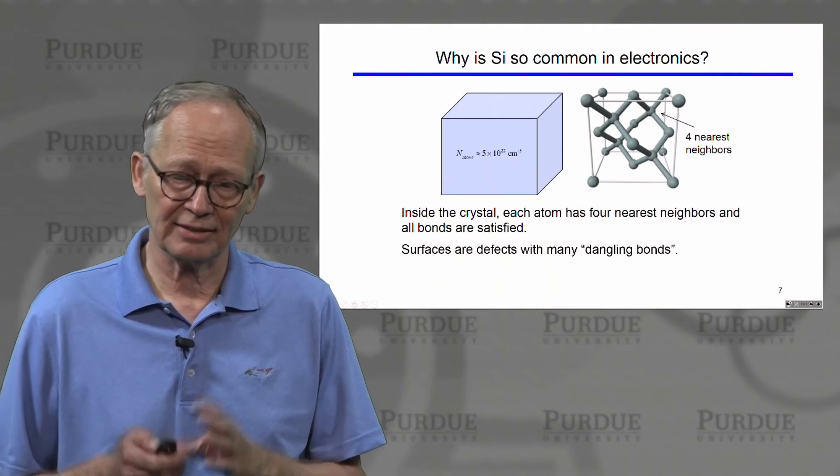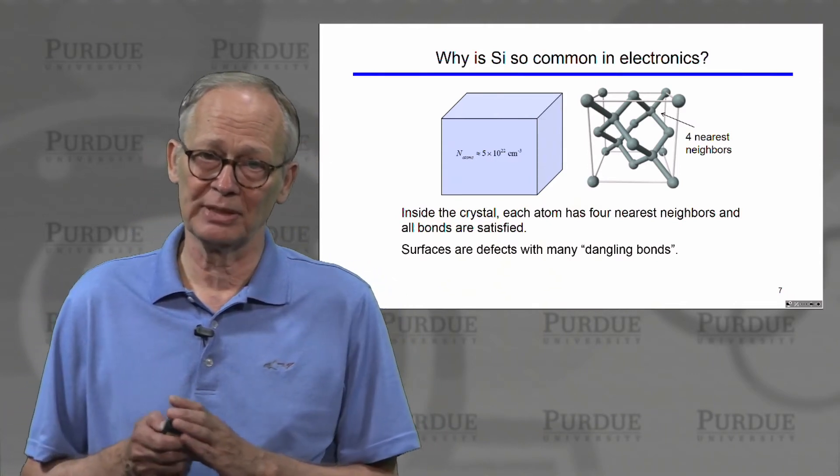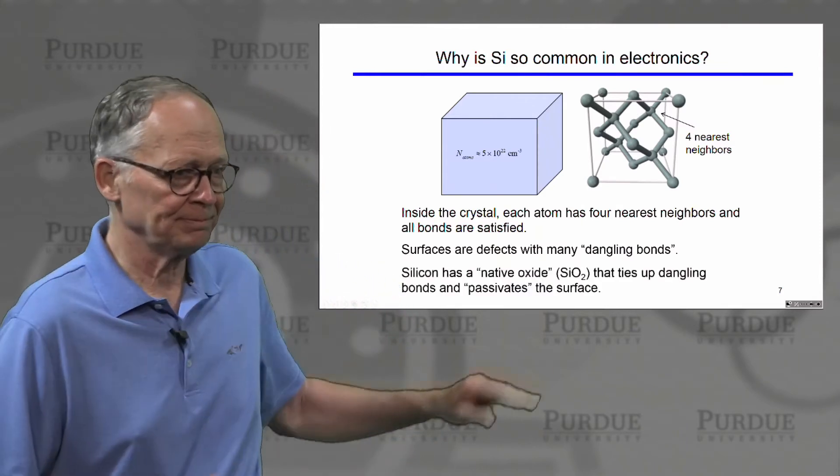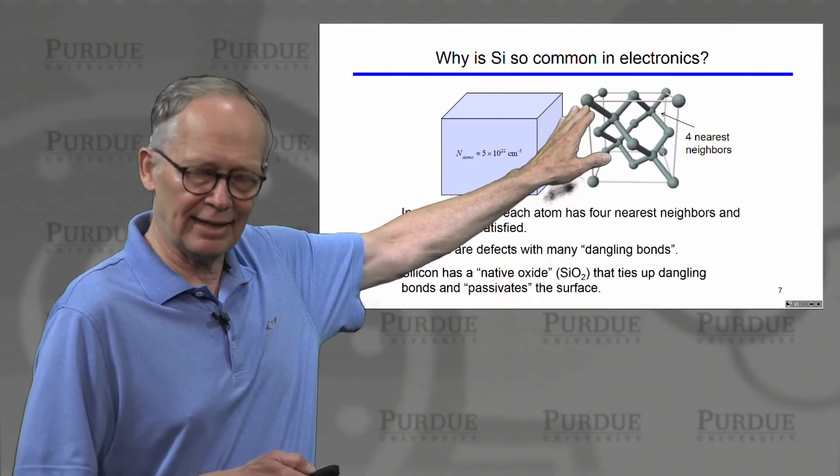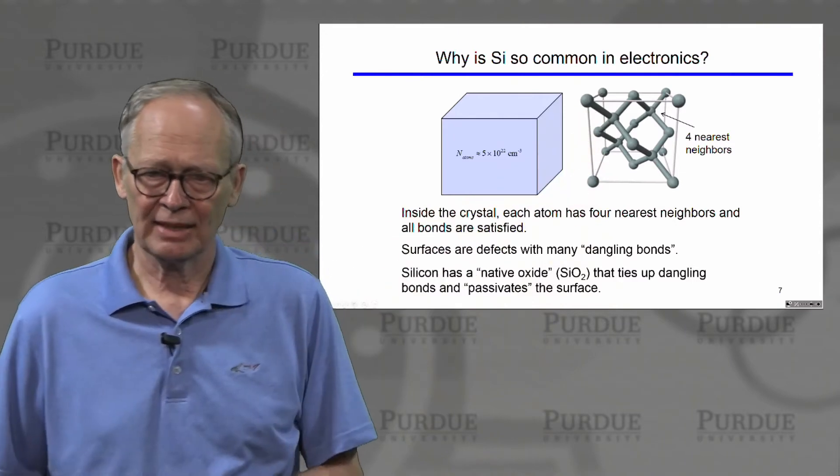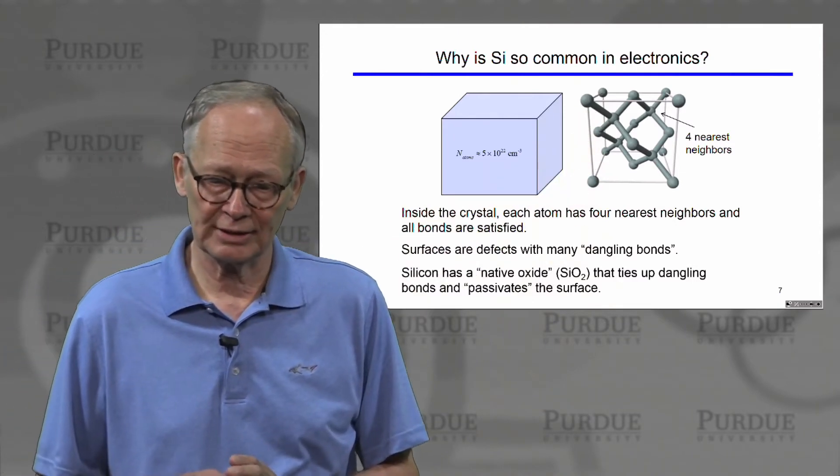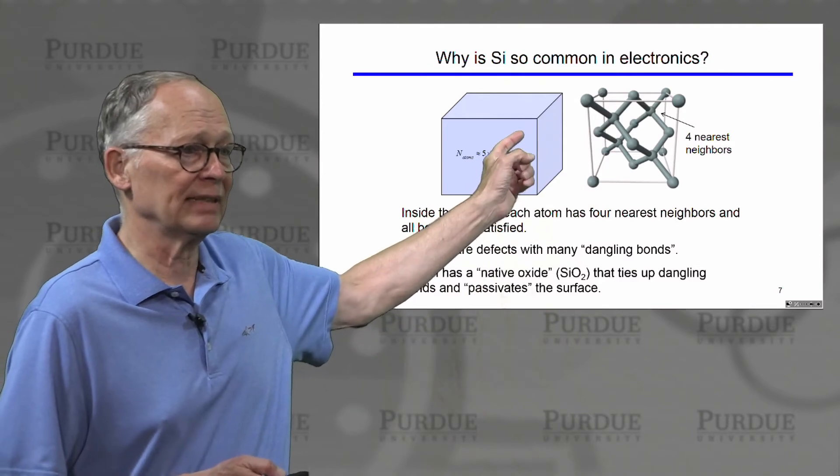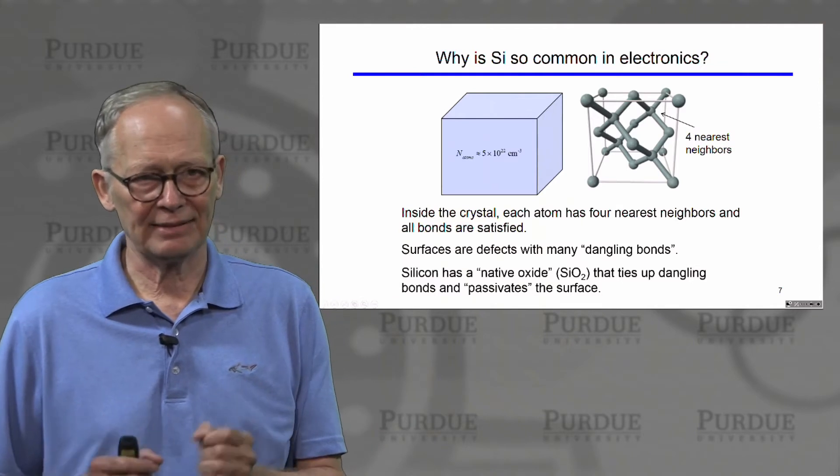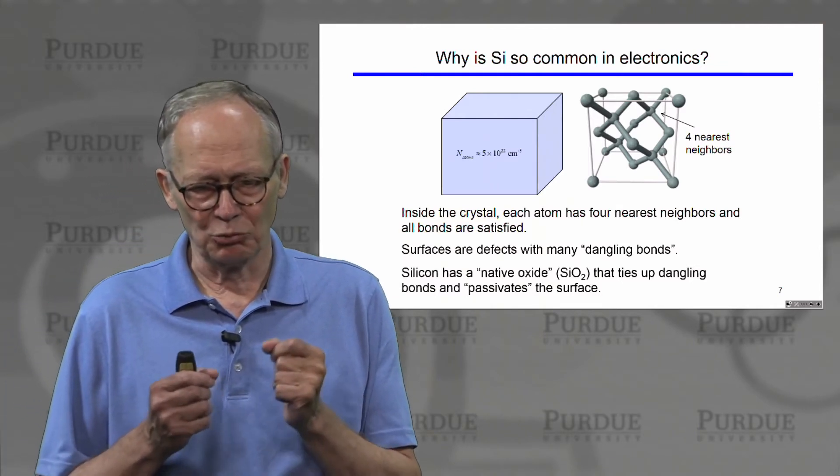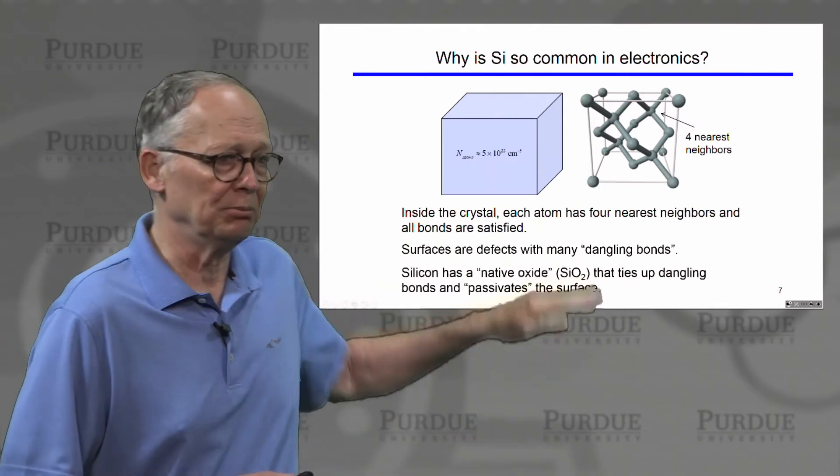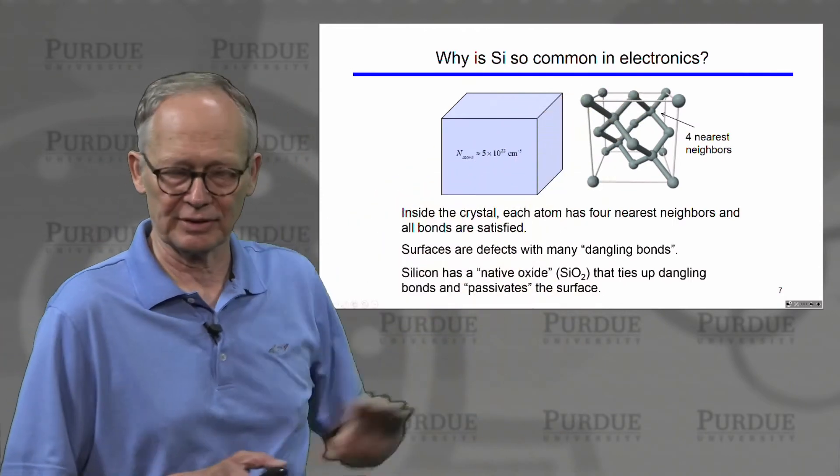Usually these defects are electronically active and they degrade the performance of a device severely. Now silicon has a remarkable property. It has a native oxide, silicon dioxide. Silicon dioxide is a hard, high-quality insulator. Its crystalline form is quartz. But the property that's most important for us is that it has the property of tying up these dangling bonds. We say that it passivates the dangling bonds and basically renders these defects electrically inactive so that we can build electronic devices on surfaces of silicon.